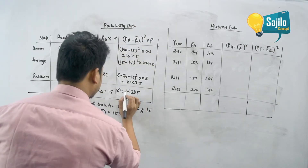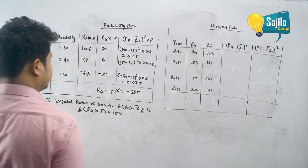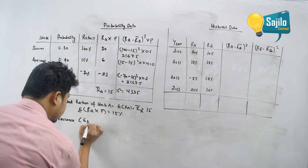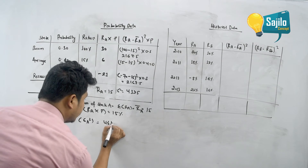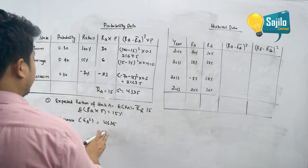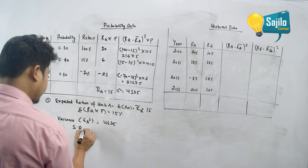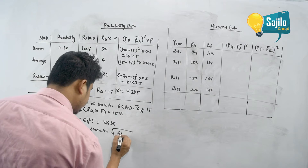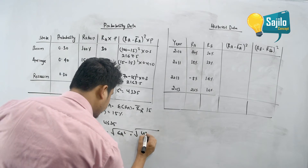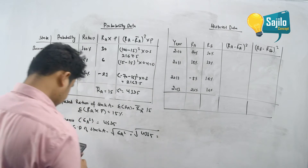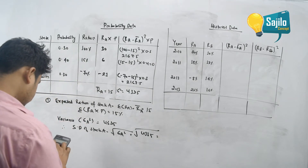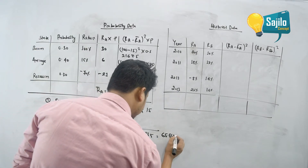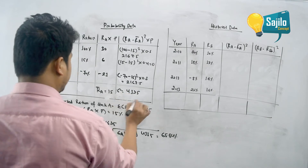This sigma squared is the variance. The variance equals 4335. What is the standard deviation? The standard deviation sigma_A equals root over sigma_A squared, which is root over 4335, giving 65.84 percent.